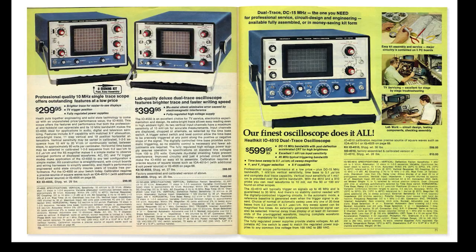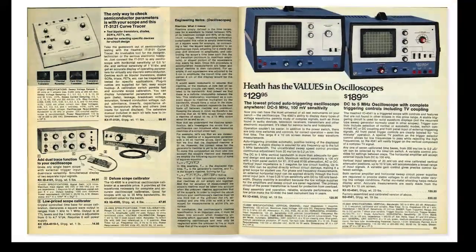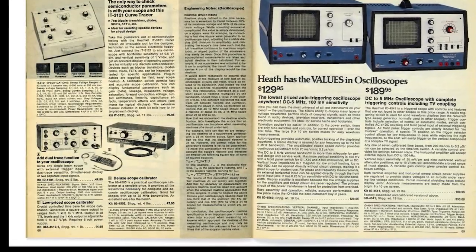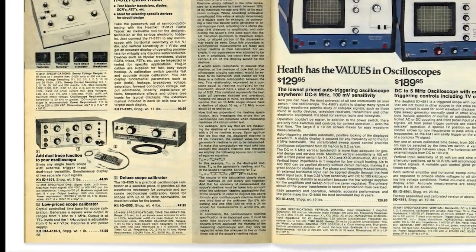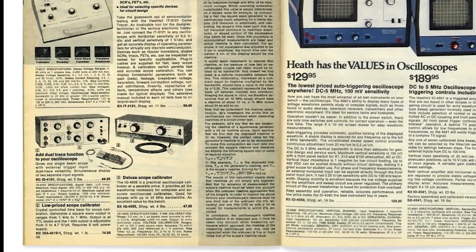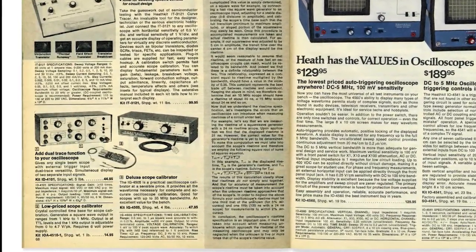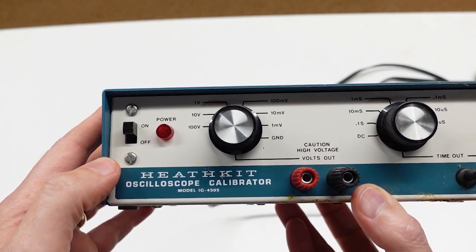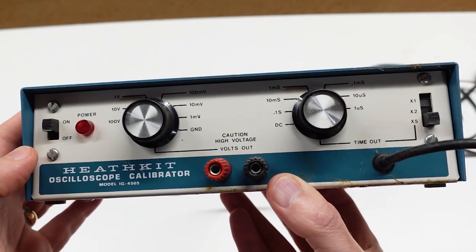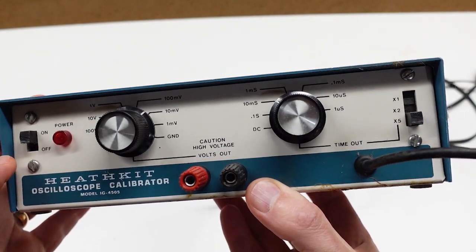An oscilloscope calibrator like this IG4505 is a bit of a limited utility test instrument. Its name accurately describes its intended function, but digging a bit deeper, you quickly see that it's essentially just a simple function generator. And by simple, I don't mean it's primitive, but rather I mean its range of functionality is pretty simple. Let's take a look at the specs to see what I mean.